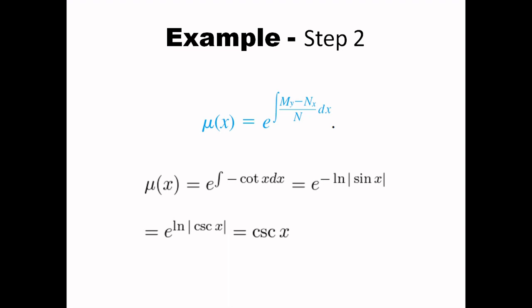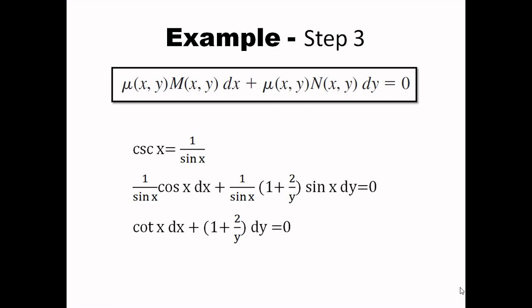To compute the integrating factor, I take the integral of negative cot(x), and the result is cosecant(x). The next step is to multiply the integrating factor with the given differential equation. Cosecant(x) equals 1 over sin(x), so I multiply the equation by 1 over sin(x). Canceling sin(x) from the N part, I get: cot(x) dx plus (1 plus 2/y) dy equals 0.